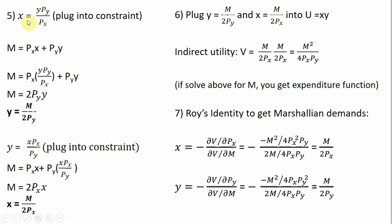First, we plug X equals Y times the price of Y divided by the price of X into the budget constraint and solve for Y. That gives us Y equals income divided by two times the price of good Y — this is the Marshallian demand for good Y. Then we plug Y equals X times the price of X divided by the price of Y into the constraint and solve for X, giving X equals income divided by two times the price of good X — the Marshallian demand for X.